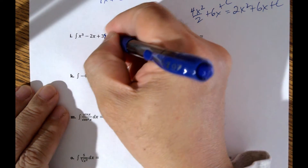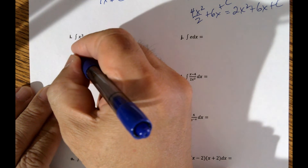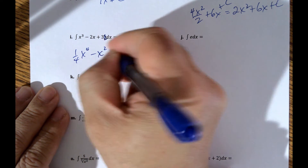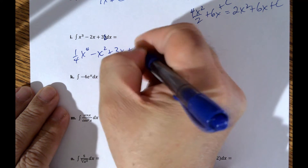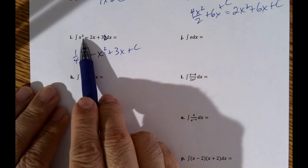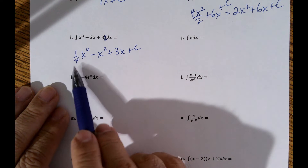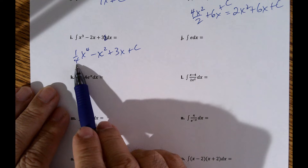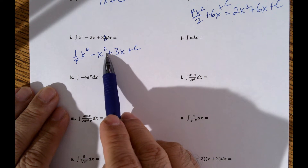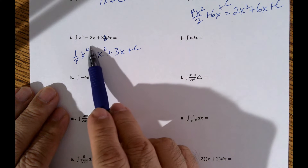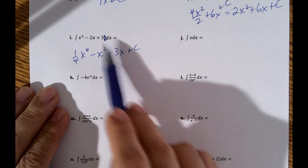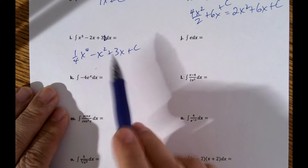Next one has an extra parentheses. So we get 1 fourth x to the 4th minus x squared plus 3x plus the constant. I added 1 to the exponent of x cubed to get 4, divided by 4, which gives 1 fourth x to the 4th. There's an invisible 1 on the x squared term: 1 plus 1 makes 2, divide by 2, so it cancels to just x squared. The constant 3 integrates to 3x.